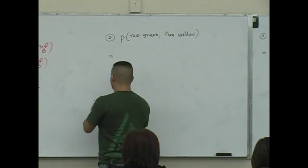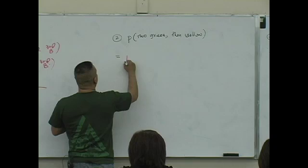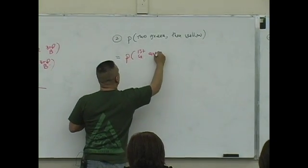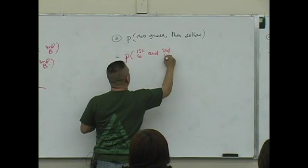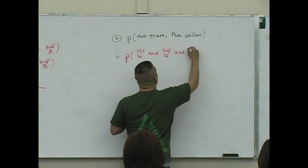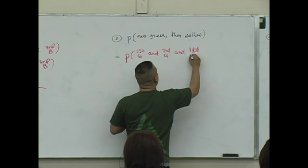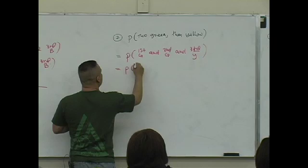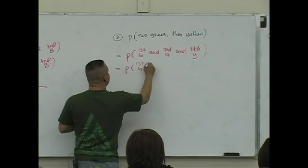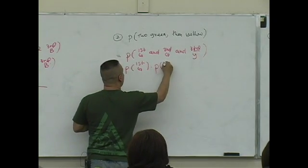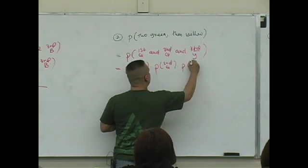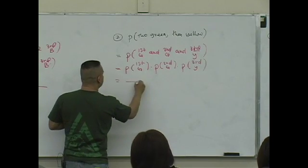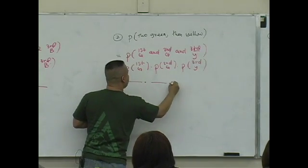Two green, then yellow. What does that mean? It means the first is green, the second is green, and the third is yellow. You're selecting three items — multiplication rule. Here we go: probability, probability, probability.